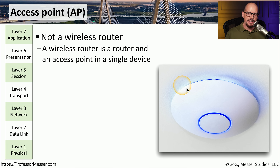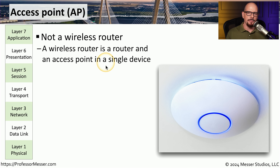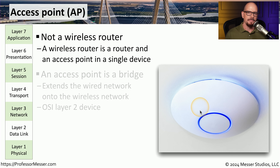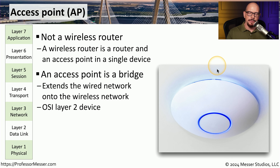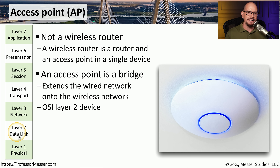If you're in your office and you look at the ceiling, you might see a device like this — this is an access point. This device allows us to communicate wirelessly from our device to the rest of the network. This is not the wireless router you might be using at home, which combines a router, a wireless access point, and a switch in the same device. In larger enterprise environments, you're usually using a device that is purpose-built for a single function. That's why we refer to access points as an OSI layer 2 device, or a data link layer device, because it's making the translation between the 802.11 wireless network and the 802.3 ethernet network.